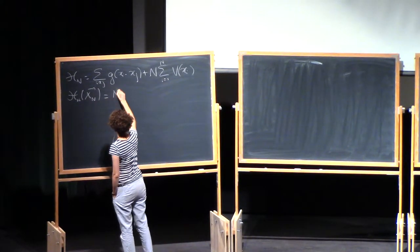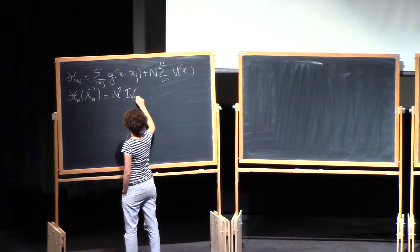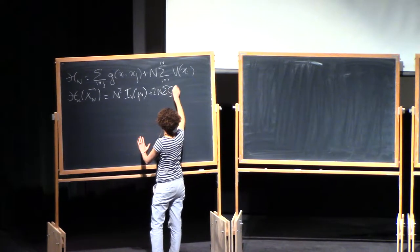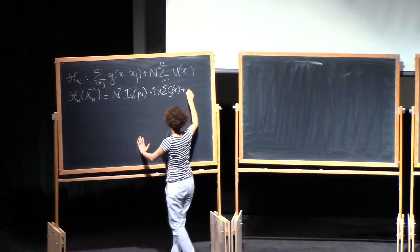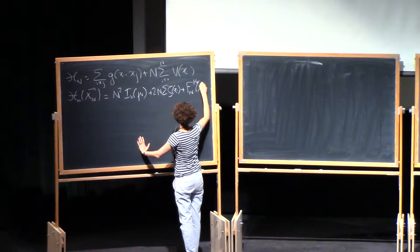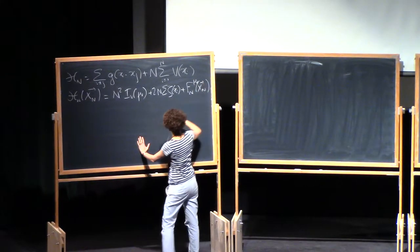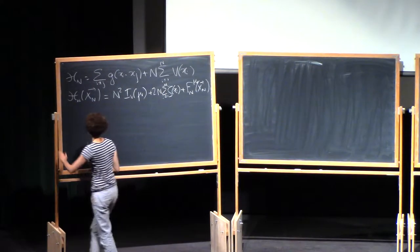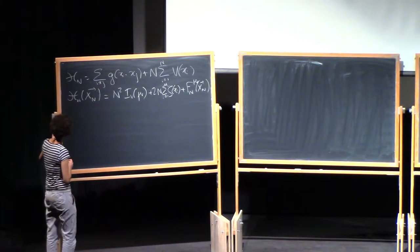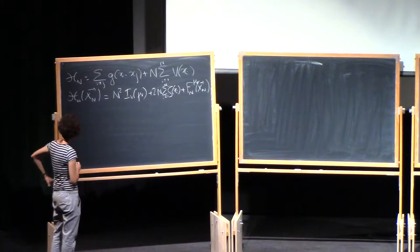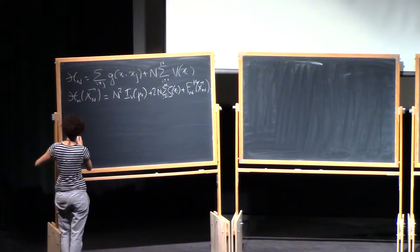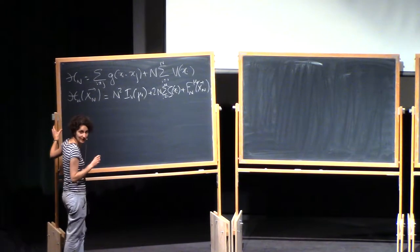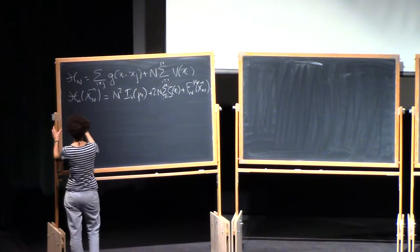We have a splitting of this form that we proved yesterday. Mu v is the equilibrium measure. Zeta is this sort of effective confining potential. And then yesterday I introduced the potential generated by the fluctuation measure, and so this one should be a straight H.